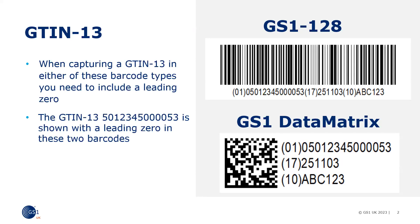This is because the GTIN field in these two barcodes is a fixed length of 14 digits. The leading zero acts as a filler character to pad out this field. It does not change a GTIN13 into a GTIN14.